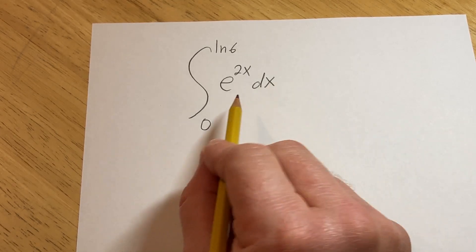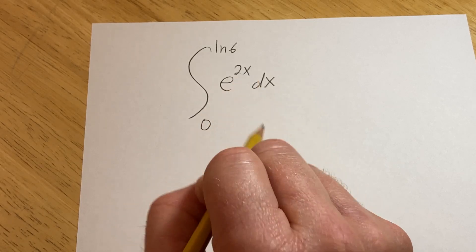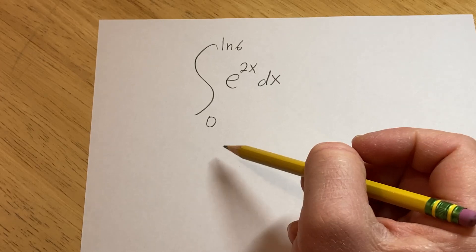Hello, in this problem we're going to evaluate this definite integral. We have e to the 2x with respect to x, and we're going from 0 to the natural log of 6.